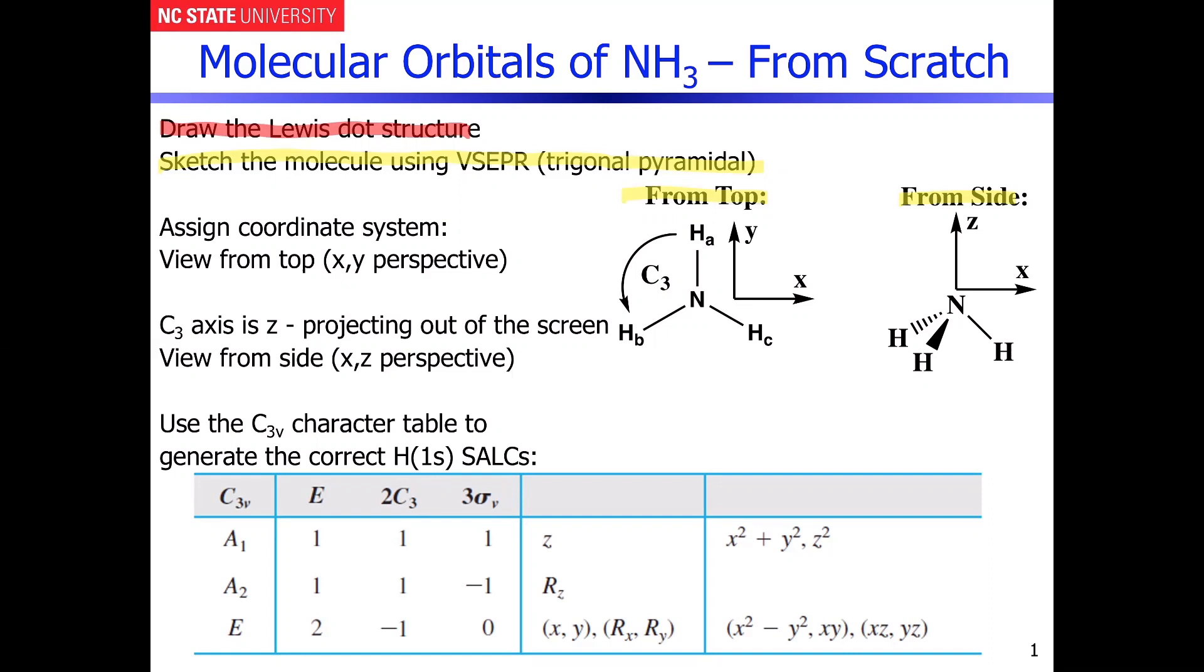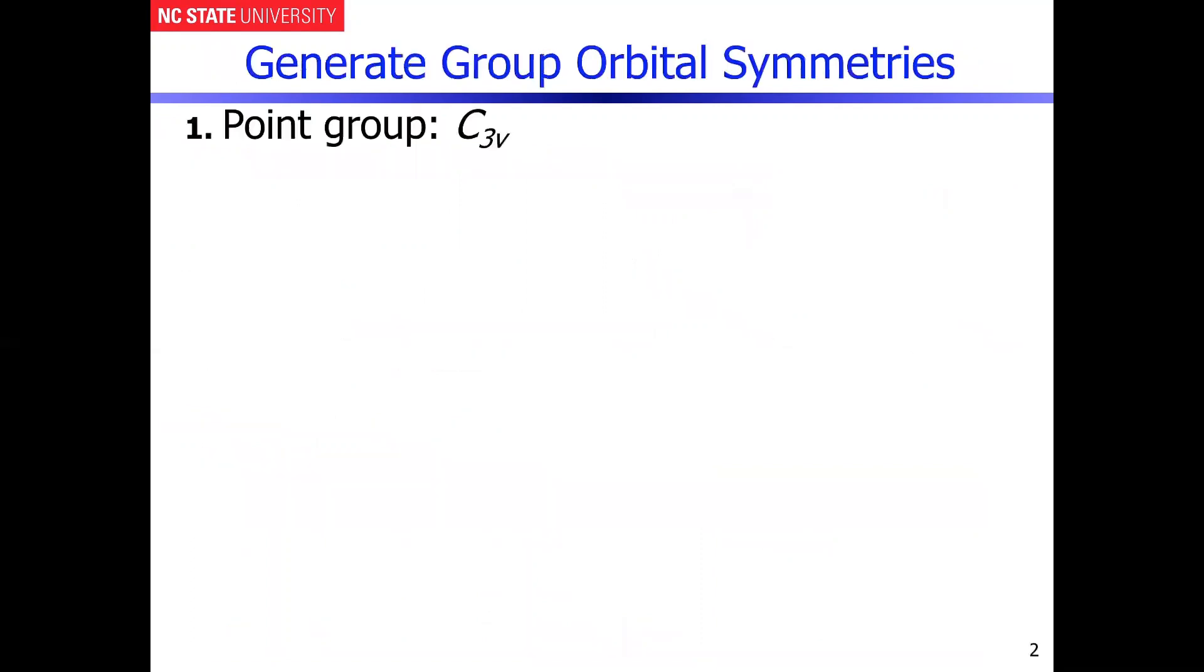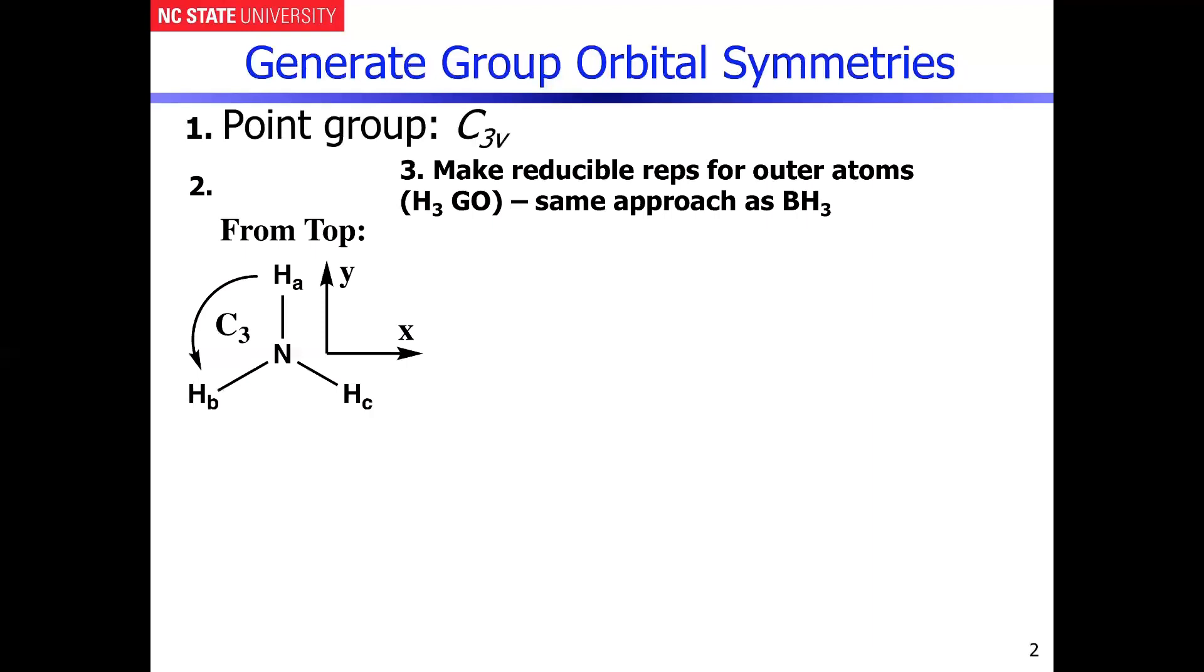So the good news for us is, is that this is all going to be in the C3v point group. And that's what we're going to use to generate the symmetry adapted linear combinations using the coordinate system that's illustrated here. So we've put it into the C3v point group. We're going to use the view from the top because it's just easier to visualize everything. And then we're going to have to make reducible representations for the outer atom, same as we've done before. And then we got to get the group orbital symmetries by reducing that representation.